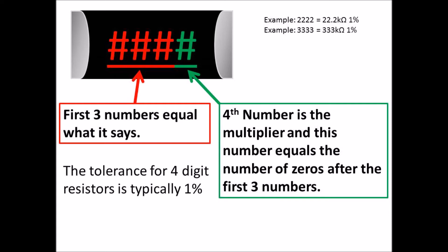And then the second example is 3333, where you have the multiplier adding three zeros after 333, which equals 333 kilohms. And a four-digit resistor is typically a 1% tolerance.